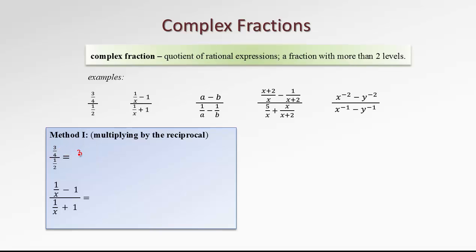Copy the big numerator, three quarters, and then convert this main division into multiplication by the reciprocal of the denominator fraction. The reciprocal of one-half is two over one. Then we perform the regular multiplication — we want to reduce where possible. For example, this two with the four, leaving us one here and two there. So the final answer is three over two, three halves.